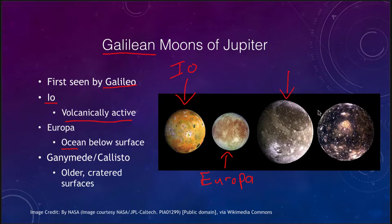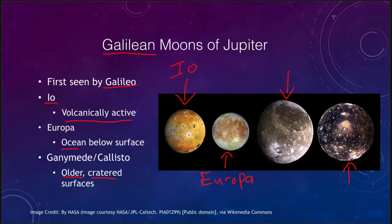Ganymede is the largest moon in the solar system, and Callisto is the outermost of Jupiter's four Galilean satellites. Both still have some structures to them but generally have older and more cratered surfaces. We don't see any craters on Io, we see a handful on Europa, but we see a lot more when we get out to Ganymede and Callisto. Let's look at each of them in a little more detail.